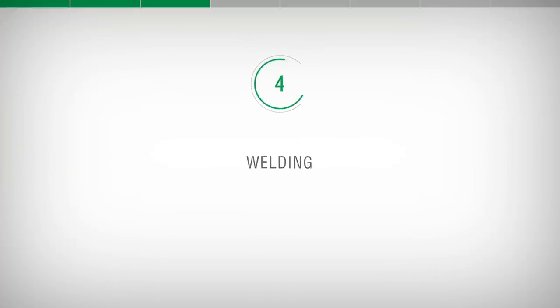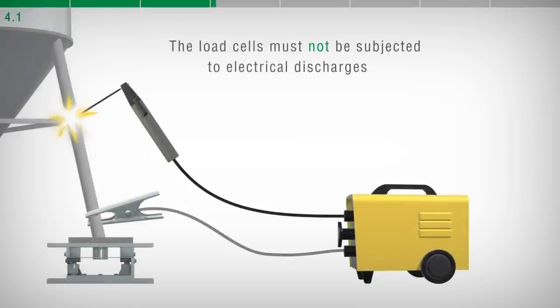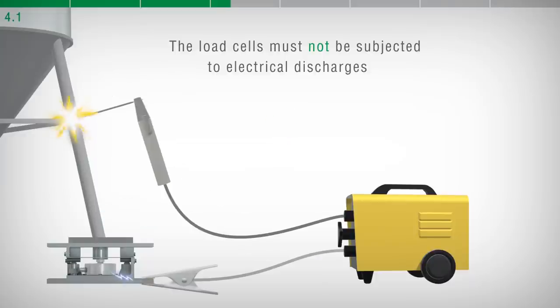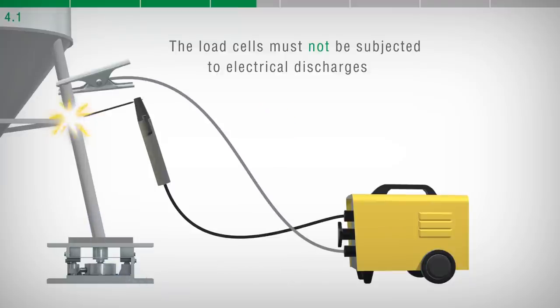Welding. It is recommended to avoid welding while the load cells are installed. If this cannot be avoided, place the welder ground clamp close to the required welding point to prevent sending current through the load cell body.